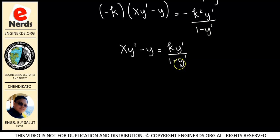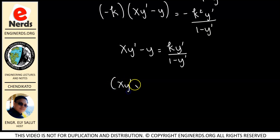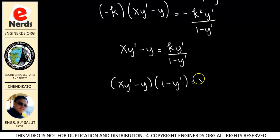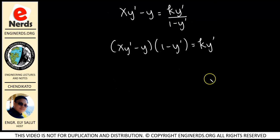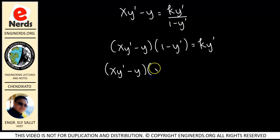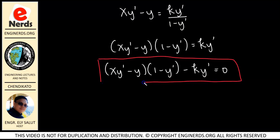Transposing k y prime to the left side, our final differential equation is x y prime minus y times 1 minus y prime minus k y prime is equal to 0. We have successfully eliminated our arbitrary constants a and b.